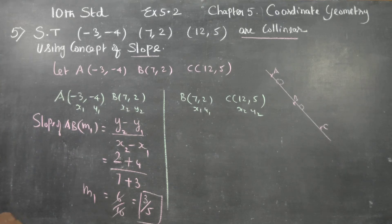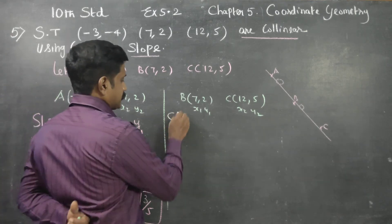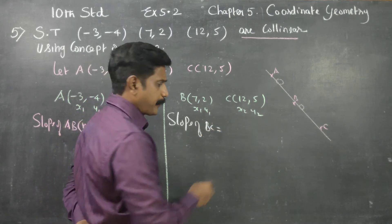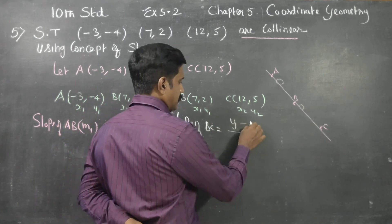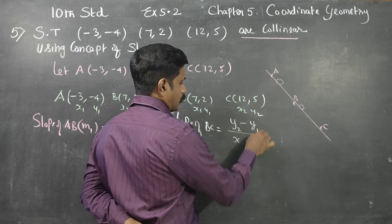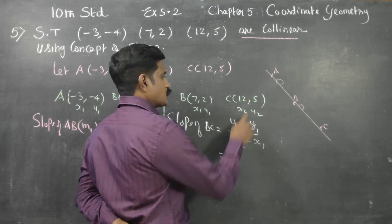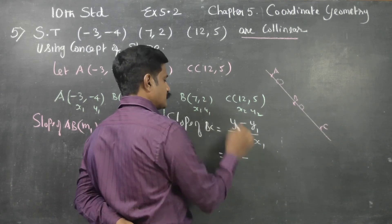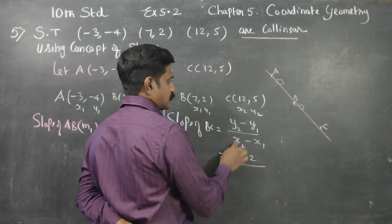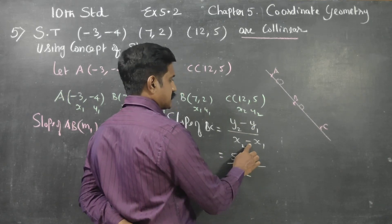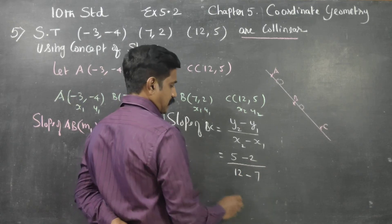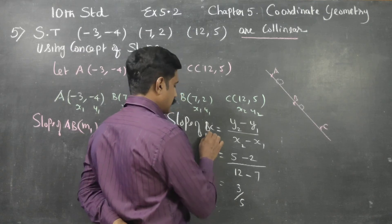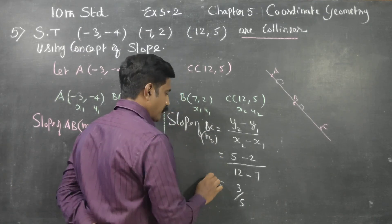After finishing slope of AB, I am entering into slope of BC. Slope of BC uses the two-point formula: (y2 - y1) / (x2 - x1). What is y2? It is 5. Minus y1, which is 2. x2 is 12, minus x1 which is 7. So 5 minus 2 is 3, and 12 minus 7 is 5. This is my m2, the slope of BC.